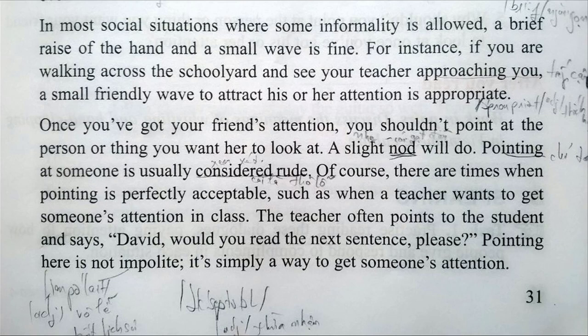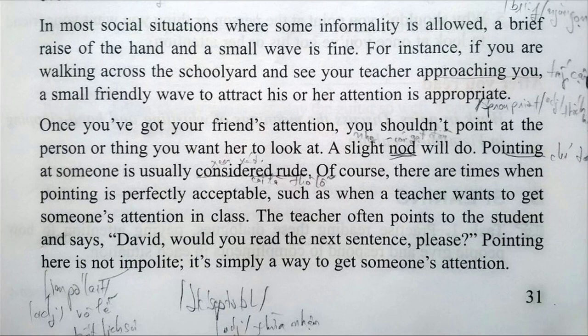Once you've got your friend's attention, you shouldn't point at that person or thing you want her to look at. A slight nod will do. Pointing at someone is usually considered rude. Of course, there are times when pointing is perfectly acceptable, such as when a teacher wants to get someone's attention in class. The teacher often points to the student and says, 'David, would you read the next sentence, please?' Pointing here is not impolite — it's simply a way to get someone's attention.